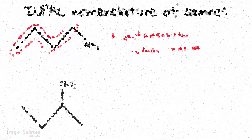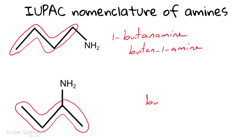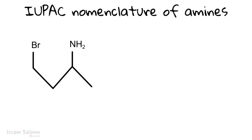For the next structure, the longest chain is also made of four carbon atoms, so it is going to be called butanamine. Since the amino group is connected to the second carbon, we call it 2-butanamine.